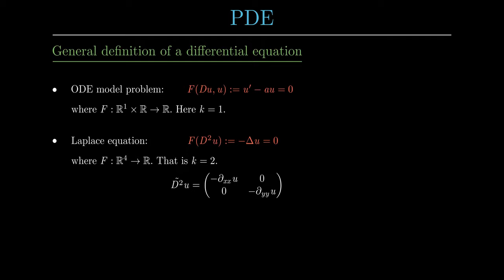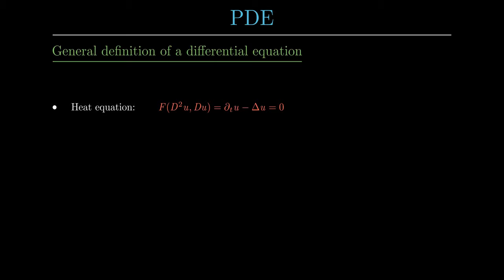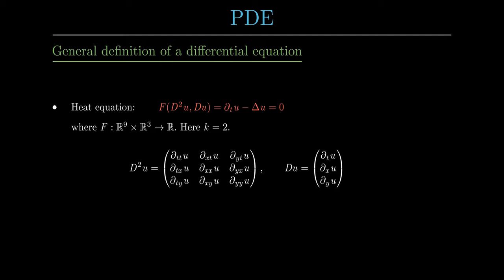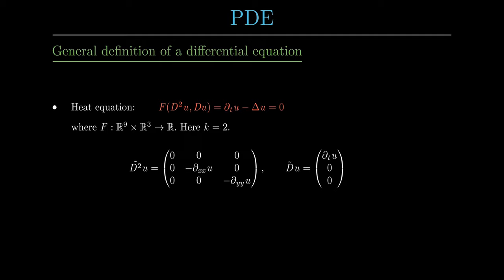Only the diagonal entries of the modified Hessian come up in f, and they have a minus sign due to the minus in front of the Laplacian. The second important PDE is the heat equation, where f is the first time derivative of u minus the Laplacian of u. In the heat equation there is no second time derivative of u, so the second time derivative has an entry of 0 in the modified Hessian.